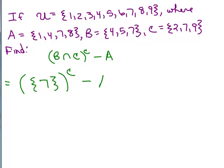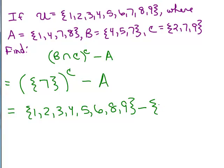And I could write out all of A, but I know I'm going to do one more step, so I'm going to save myself some extra writing and do that the following step. Now I've got to take the complement of this set that only contains seven. Well, that's every number from one to nine except seven. All right, that's the complement of this set that contains seven. And subtract anything that's in A, and A is one, four, seven, and eight.